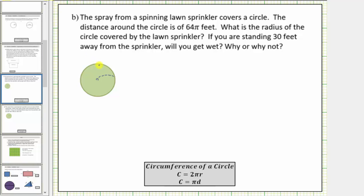We know the distance around the circle, which is called the circumference, is sixty-four pi feet. Let's go and label this as C for circumference equals sixty-four pi feet.